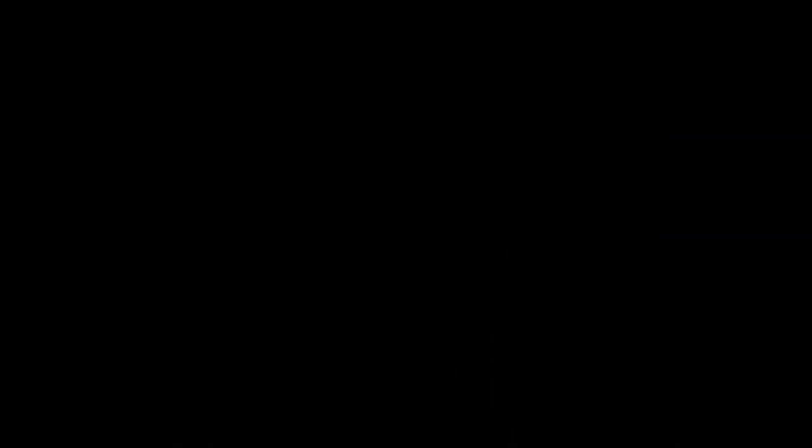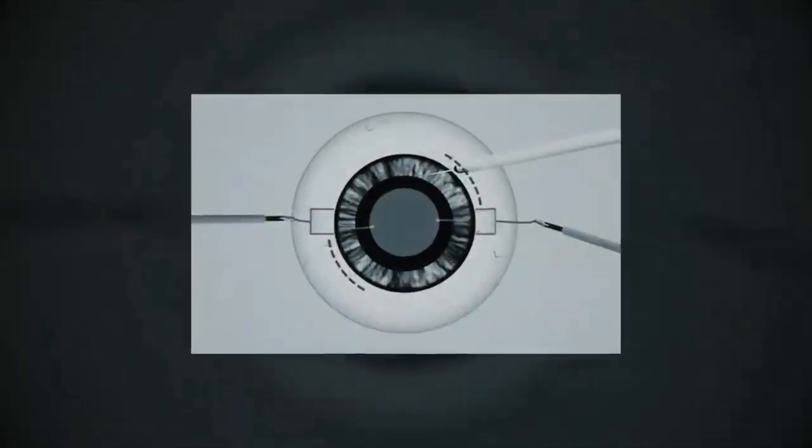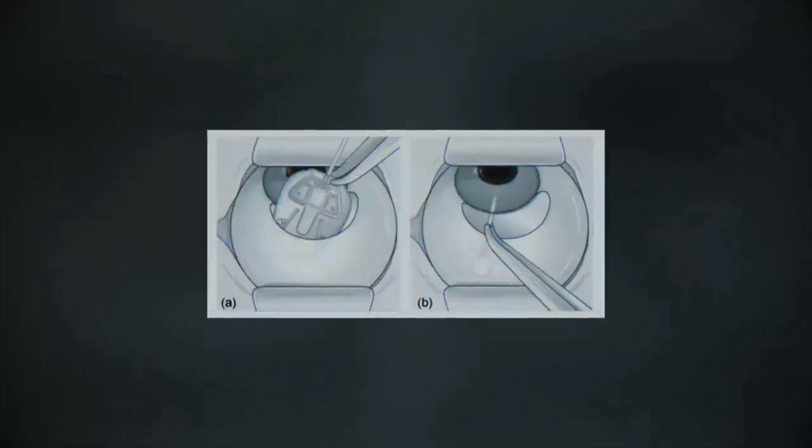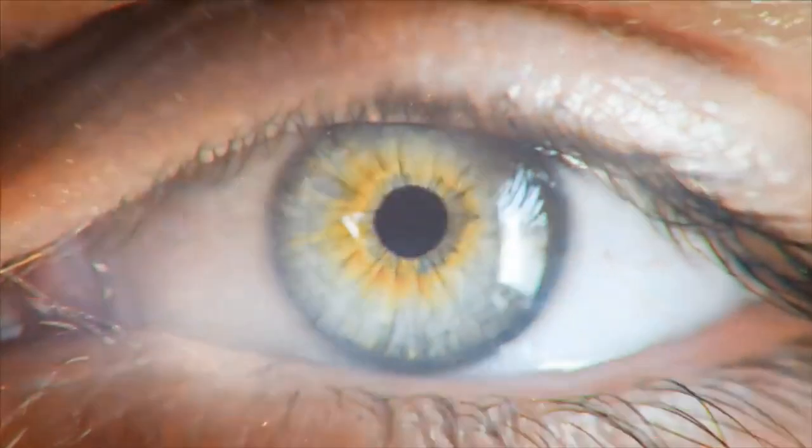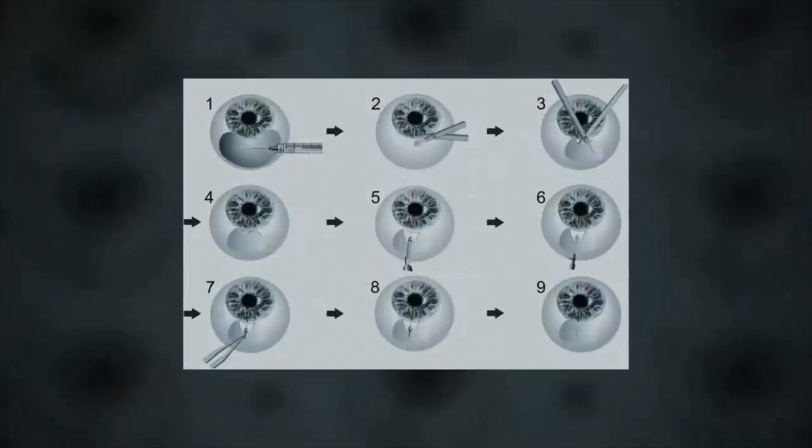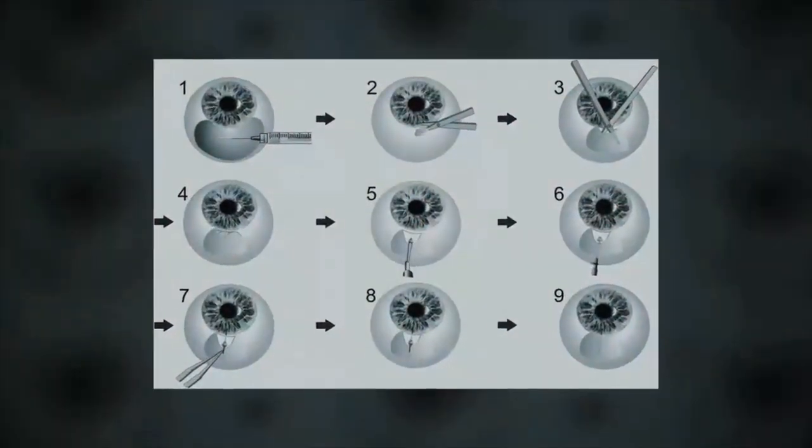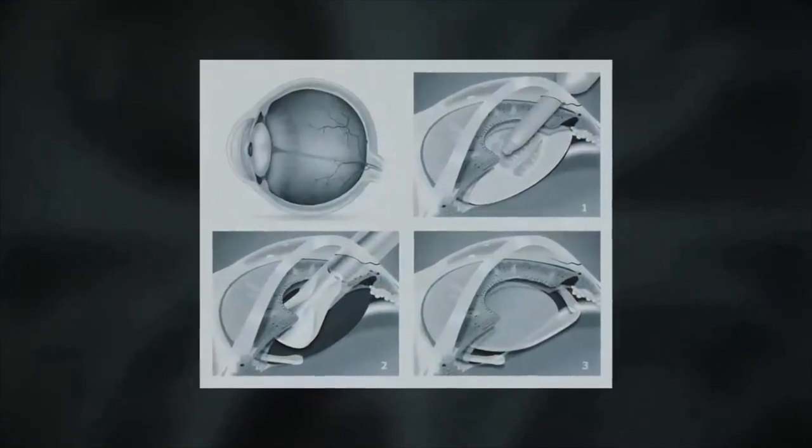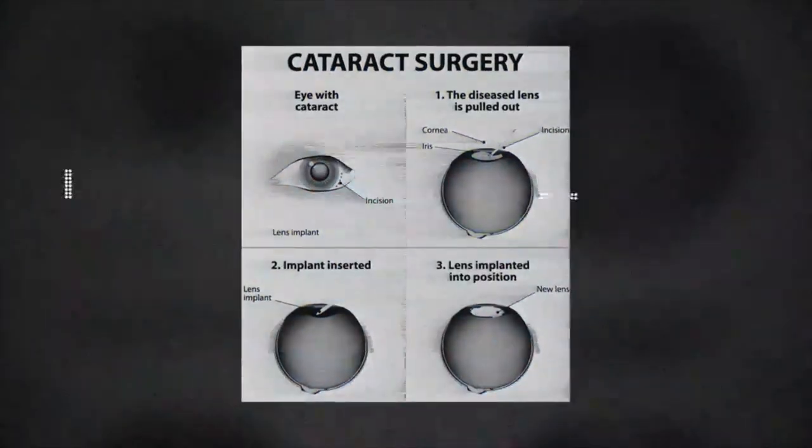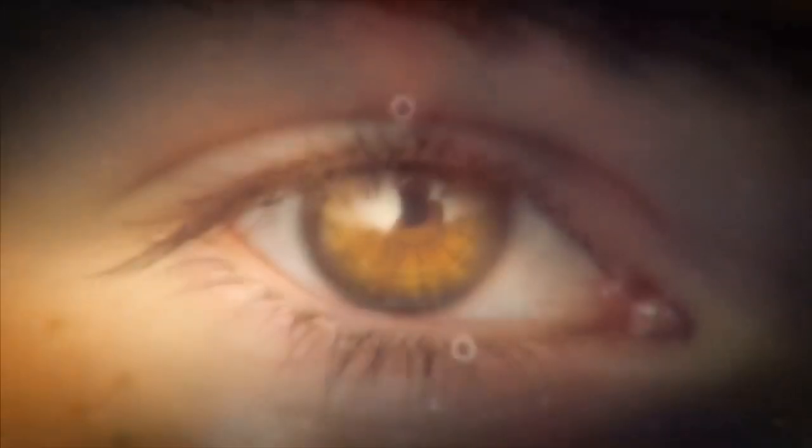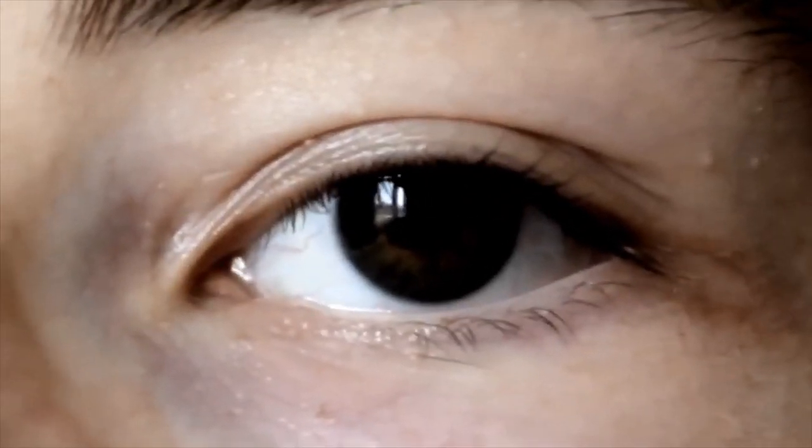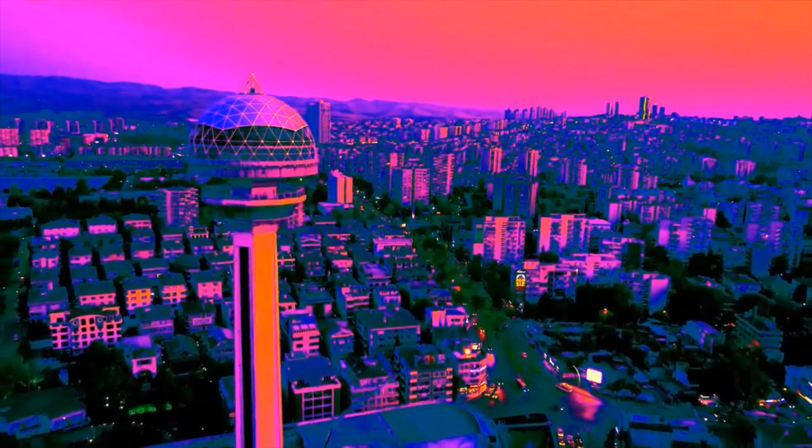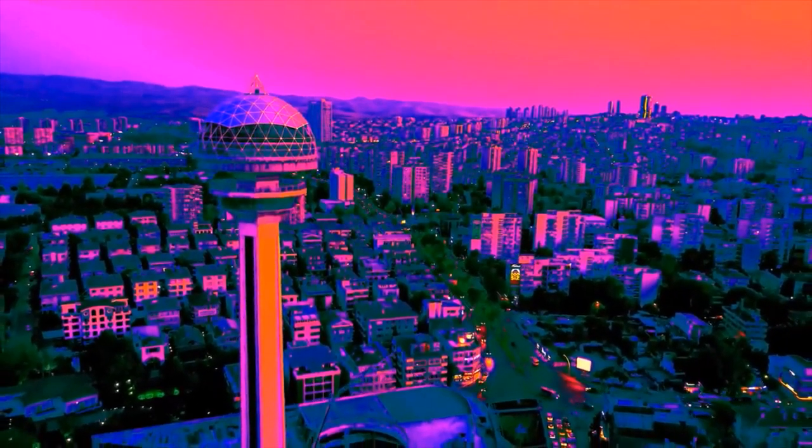One of the most extreme options would be the surgical implantation of various eye modifications. People are unlikely to agree to the removal of healthy parts of their visual system. Therefore, such an operation to install high-tech equipment in the body will probably be carried out only in cases of illness or injury to the eyes. In exchange for ordinary vision, a person will be able to see the entire spectrum of electromagnetic radiation.